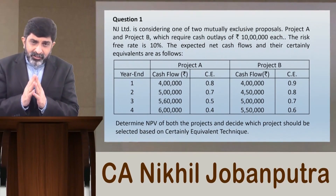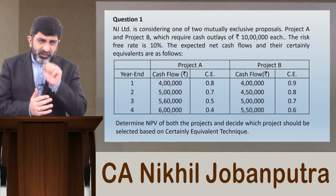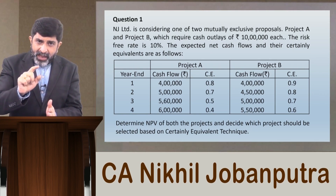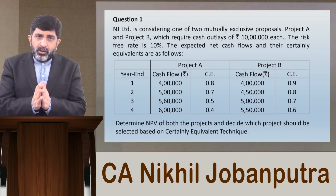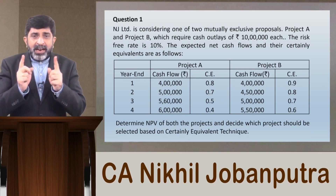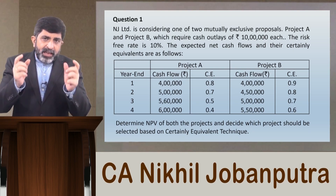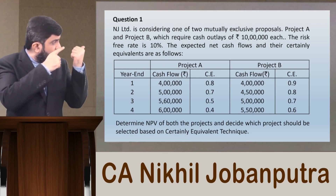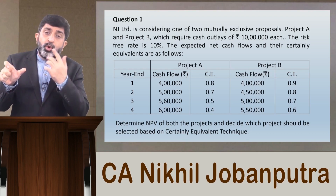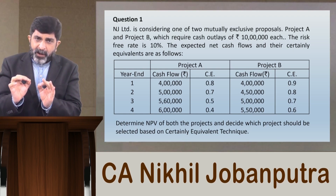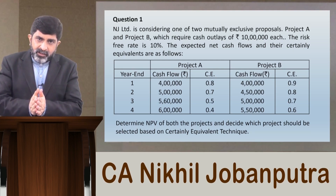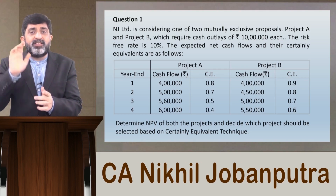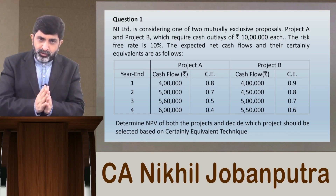Two projects with four-year lives are given; compute NPV using the certainty equivalent technique. There is no risk adjustment with the discounting rate — risk adjustment is done with the cash flows. For any project, write columns: Year, Uncertain Cash Flows, CE Factors, and CECF. The reported cash flows are uncertain amounts. Multiply them by the given certainty equivalent factors — you are not asked to compute these factors, they are provided.